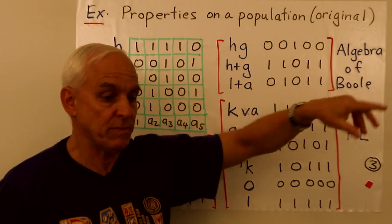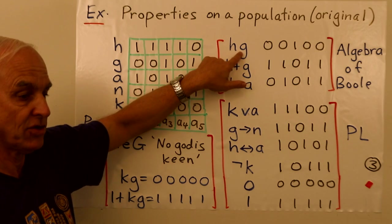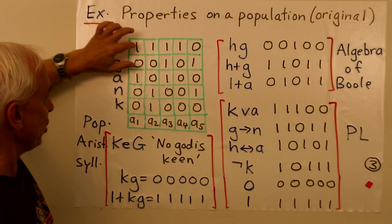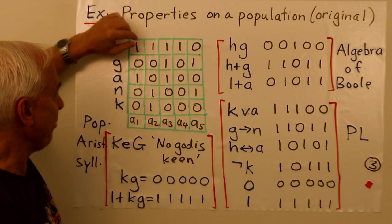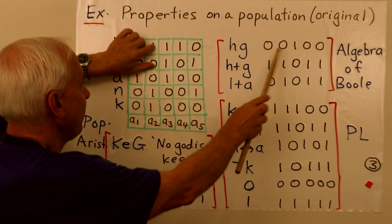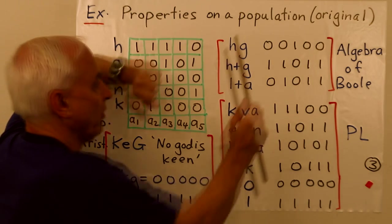Now in the algebra of Boole, there's basically three things that we can do. We can multiply two vectors, like H times G, and the multiplication is just a mod 2 operation. 1 times 0 is 0, 1 times 0 is 0, 1 times 1 is 1, and 1 times 0 and 0 times 1 are all zeros.